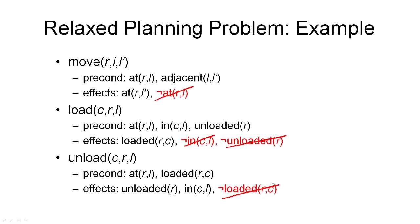What this gives us is a planning problem that contains some magical objects. For example, looking at the first operator where we move the robot R from location L to L-prime, the precondition is that the robot is at location L. As a result of this operator, we will have the robot at location L-prime. But because we've removed the negative effect, the robot would still be at location L — so it's now in both places. The same goes for the containers in the other actions: after a load or unload action, containers remain in the place where they used to be but are also in the new place. That's the problem we need to solve to compute the relaxed problem heuristic.